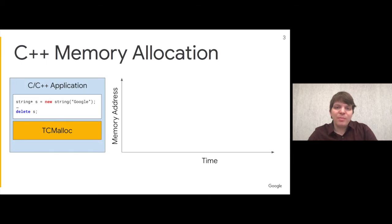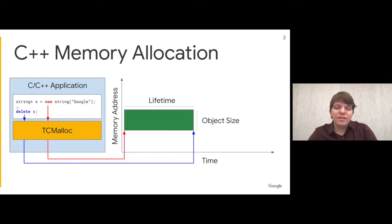To understand where this fragmentation comes from, we need to look at how C++ memory allocation works. When your program calls new, the memory allocator places the object somewhere in memory, and once placed, it can't be moved. At some point, the program calls delete and the object is freed. The time between the new and delete call is the lifetime of the object.